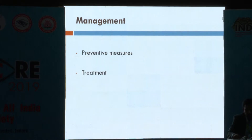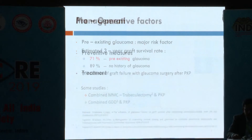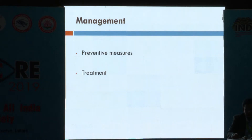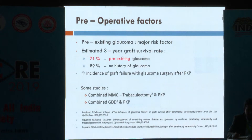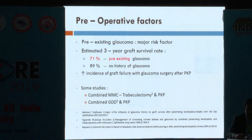Management of post-penetrating keratoplasty glaucoma can be done by preventive as well as treatment approaches. Preoperatively, pre-existing glaucoma has to be detected, as it is a major risk factor for post-PK glaucoma. It has been estimated that the three-year graft survival rate is around 71% in patients with pre-existing glaucoma, compared to 89% with no history of glaucoma.